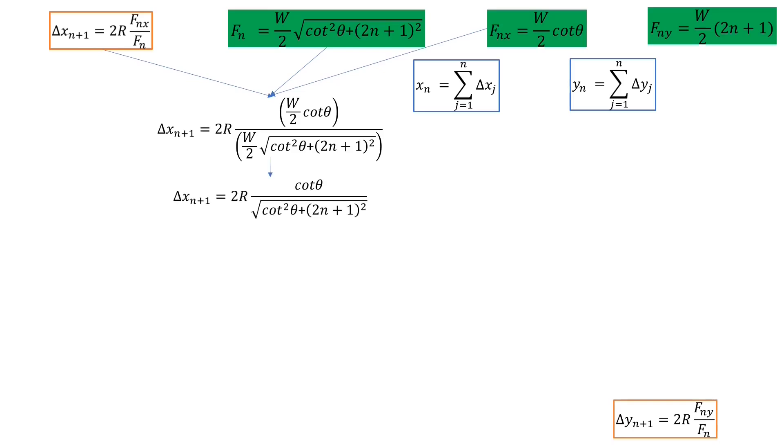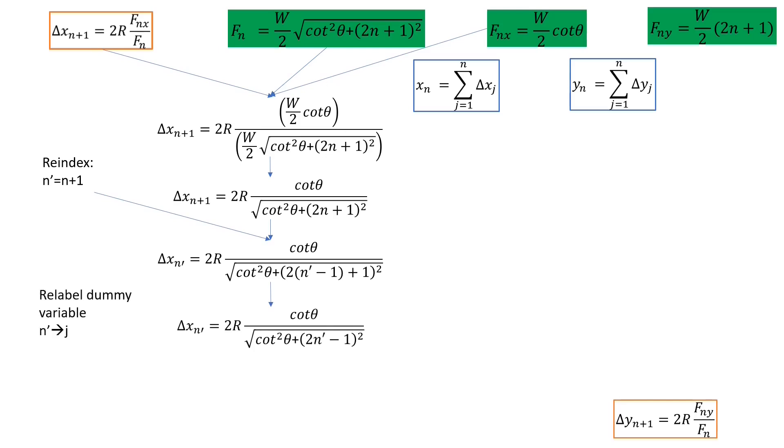But we're left with delta x of n plus 1. But it's incompatible with delta x sub j in the blue box. So a temporary change of index. Let n prime equal n plus 1. Written this way, the delta x formula is, which simplifies to this. And now we just relabel the dummy index n prime as j and plug this into the summation to get this. And now we move things around a bit.